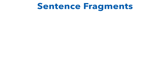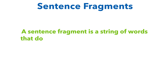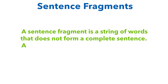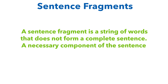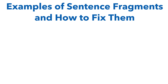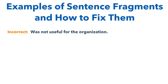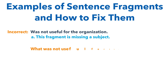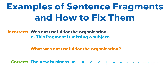Sentence fragments. A sentence fragment is a string of words that does not form a complete sentence — a necessary component is missing. For example: 'Was not useful for the organization.' This fragment is missing its subject. If you ask 'What was not useful for the organization?' you can see the subject is absent. The correct version includes a subject: 'The new business model was not useful for the organization.'